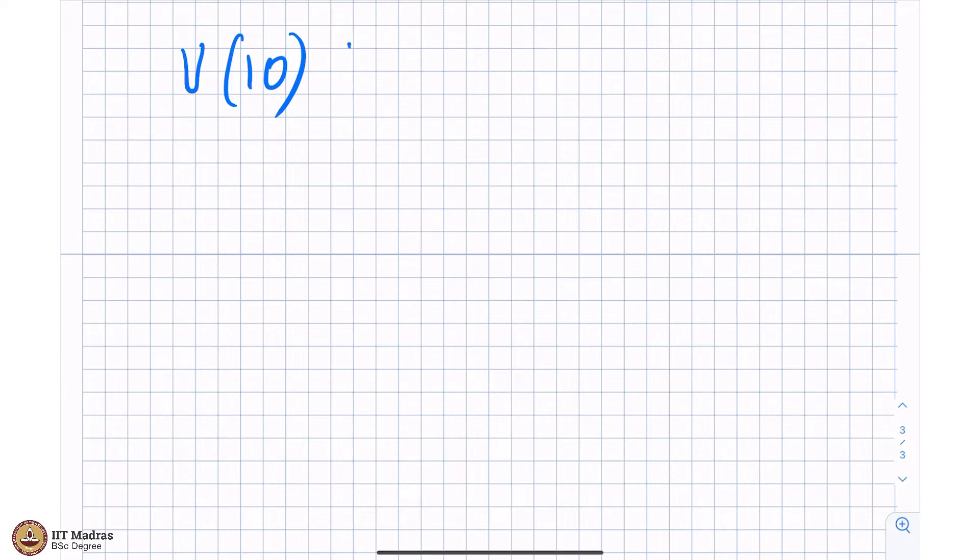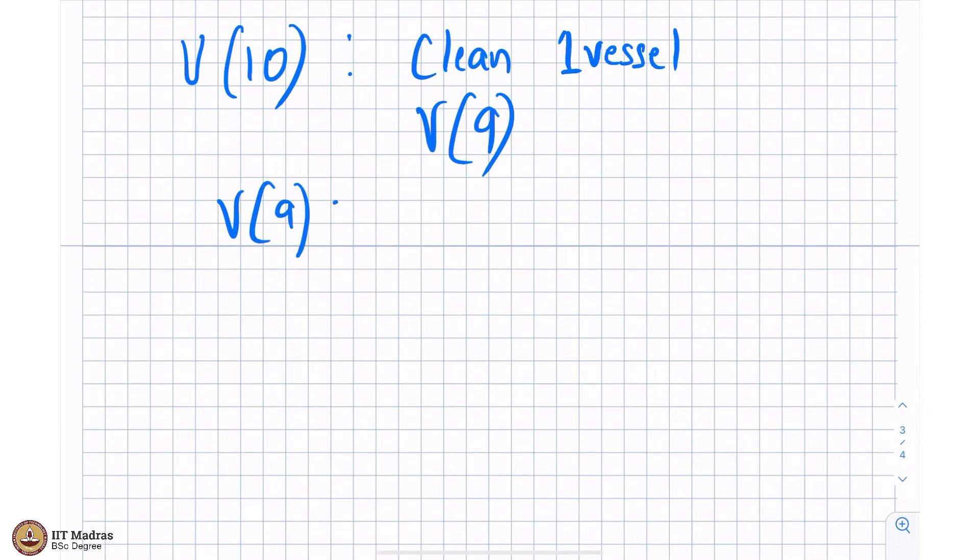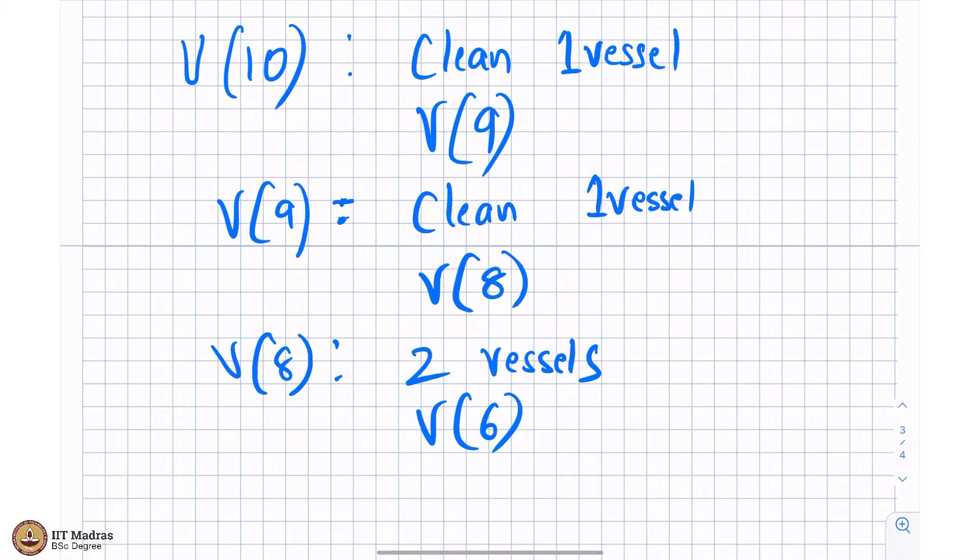One way is to simply clean one vessel, clean one vessel and request your family to help you with the other nine vessels. When you request let us say your brother to help you with the other nine vessels, your brother will sort of clean one vessel and then ask let us say sister to clean the other eight vessels and the other eight vessels what sister does is she cleans two vessels and asks dad to help her with the other six.